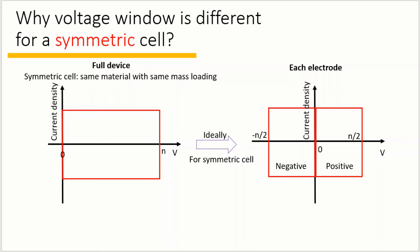For a double layer capacitor, the CV curve of a full cell should be rectangular. And ideally, the absolute value of the potential change of the positive and the negative electrode should be the same and equal to half of the overall voltage window.